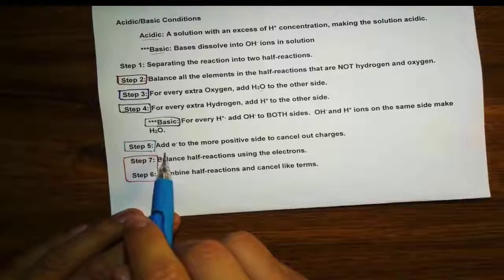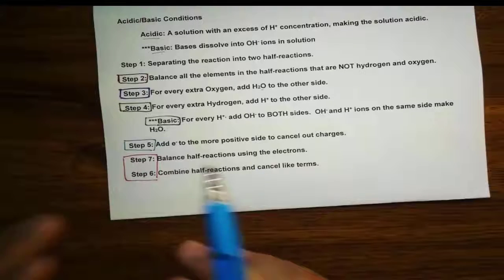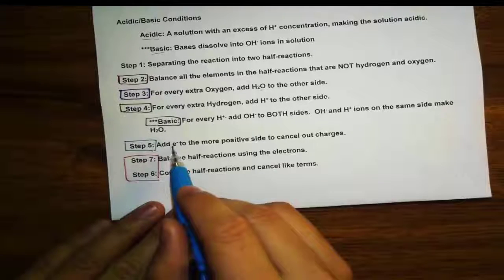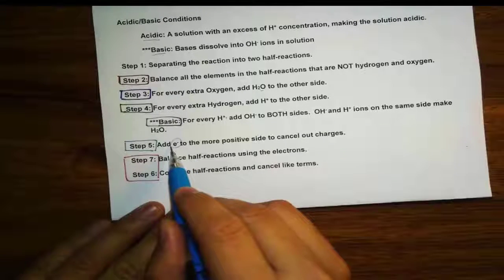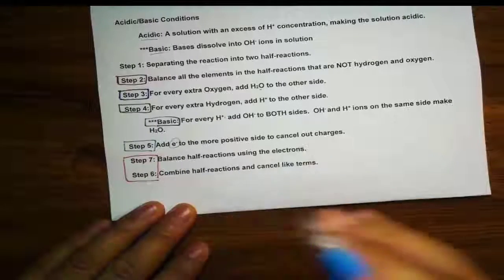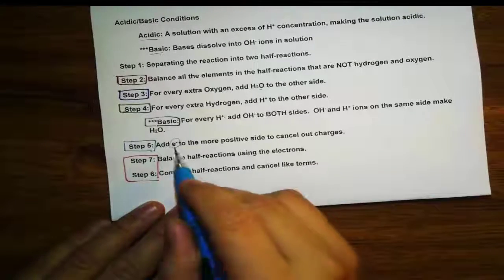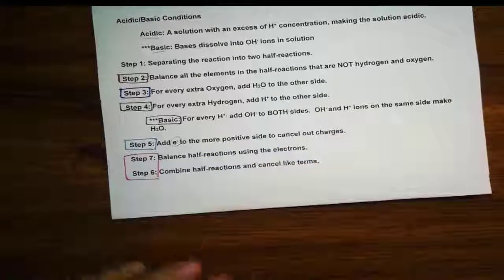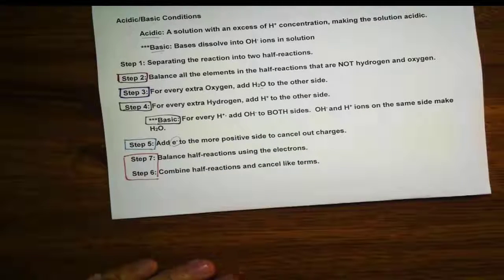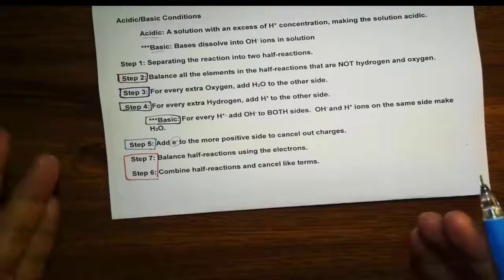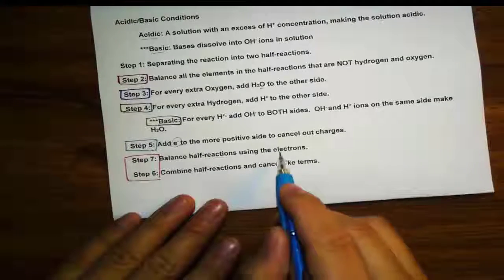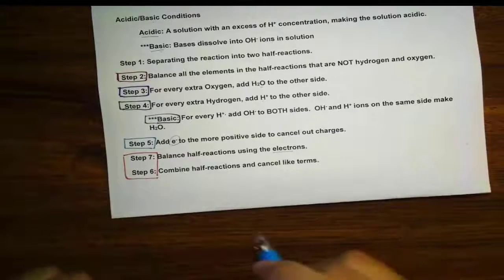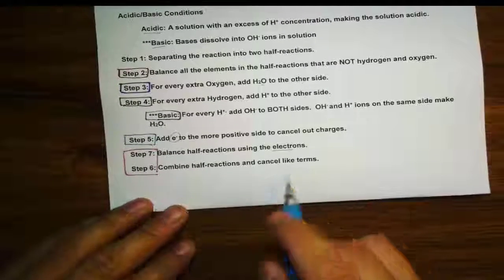Not until step 5 do you look at the electrons — and when we handle electrons, we're doing something different. We use the negative charge of electrons to cancel out the charges, which are most likely coming from the positive H⁺ charges. Then in step 7, we go back to the half-cells, look at the electrons, and do the same thing we did before. And lastly, cancel like terms.